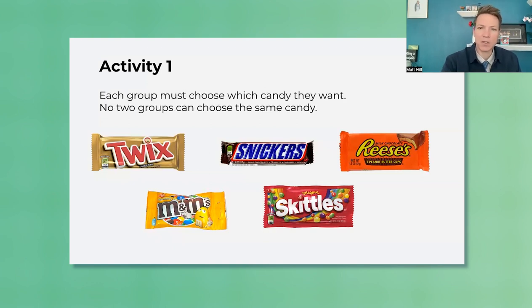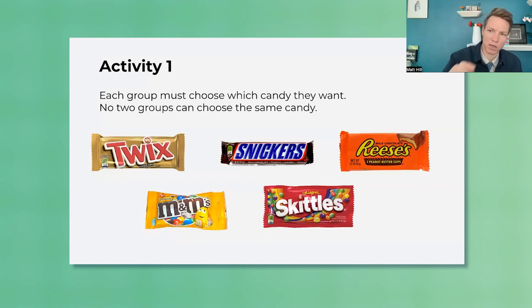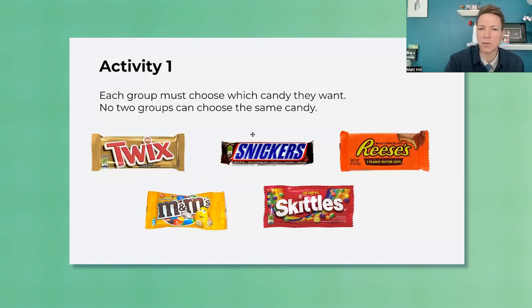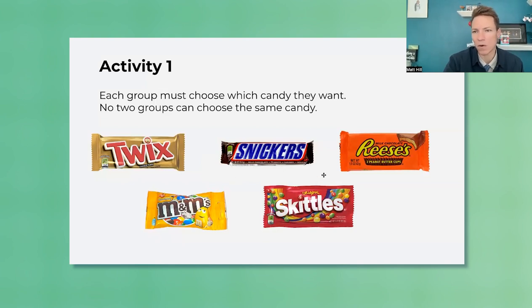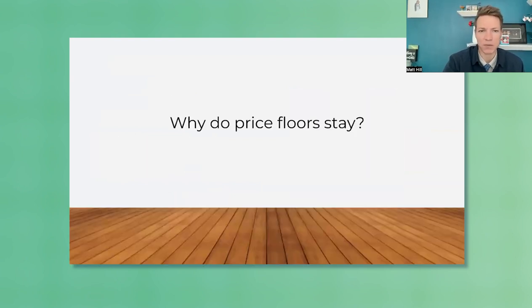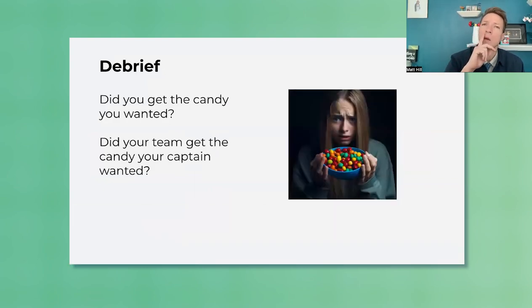Ideally what happens is they go back to their groups and talk — hey, what candy do we want? The captains are lobbying: group one assigned Twix, group two Snickers, group three Reese's, group four M&Ms, group five Skittles. Captains are saying things like, hey, let's get Skittles. Then you go group to group asking which they want, maybe flip a coin if two groups want the same thing. Hopefully the captains have successfully convinced their groups to go with whatever candy you assigned. Then you ask: did you get the candy you wanted, and was the captain successful?